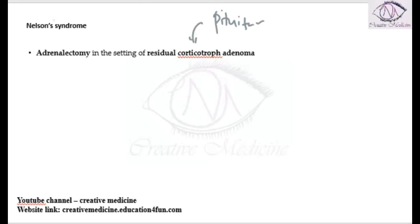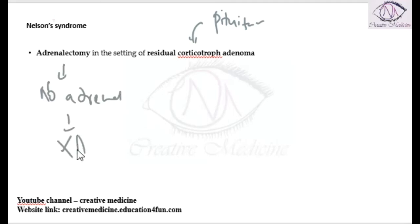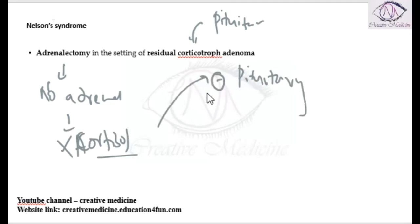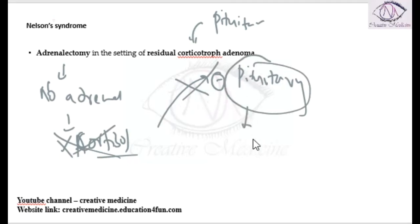This situation predisposes the patient to development of Nelson Syndrome. Because of the adrenalectomy, there is no adrenal gland, and as a result there is no cortisol. Because of decreased cortisol, the pituitary is no longer inhibited — cortisol normally inhibits the pituitary by a negative feedback mechanism, and now that cortisol is absent, this negative feedback is also absent.